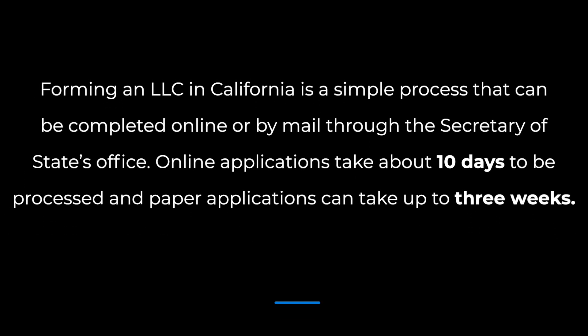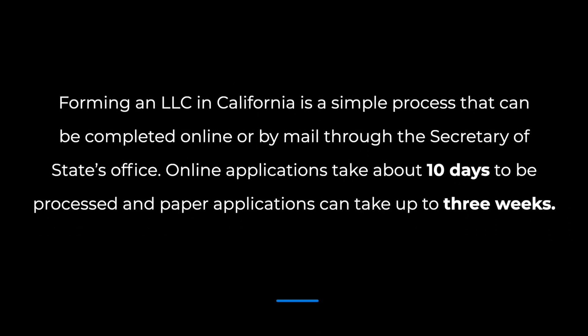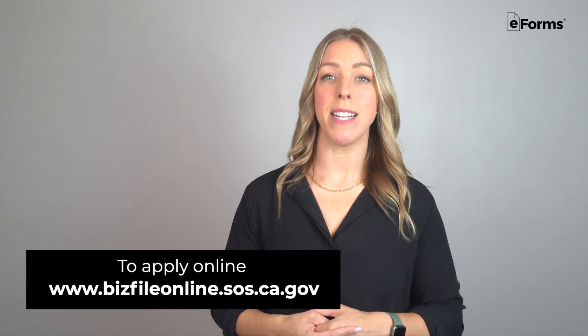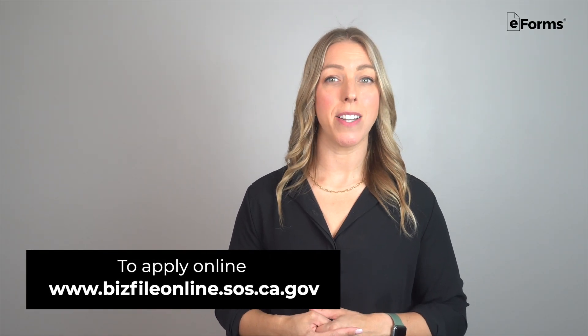Forming an LLC in California is a simple process that can be completed online or by mail through the Secretary of State's office. Online applications take about 10 days to be processed, and paper applications can take up to 3 weeks. To apply online, visit bizfileonline.sos.ca.gov, and to apply on paper, go to the link in the description below this video to download a form and get started.